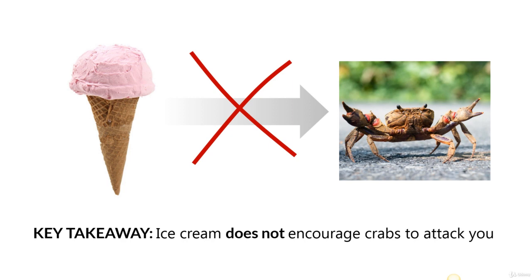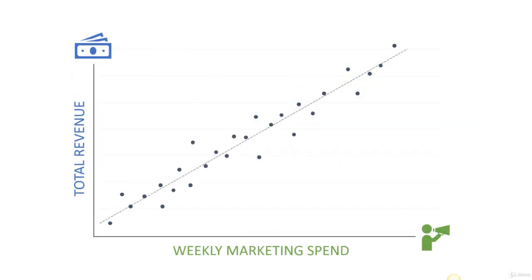Here's a more real-world business case. Maybe you run a startup, you've been live for about four months, and you're plotting your weekly marketing spend — which you've been ramping up — against your total revenue. If you were to imply causation based on this chart, you might think that ramping up your marketing spend is a surefire way to drive more revenue. That may be true, but it also may not. You've got to think about the other factors at play — maybe over those three to four months you've also been ramping up a new sales team, or your organic traffic has been growing due to referrals or PR. So be thoughtful about how you interpret these results, and please use caution before making big decisions based on these findings.